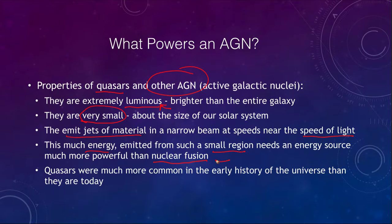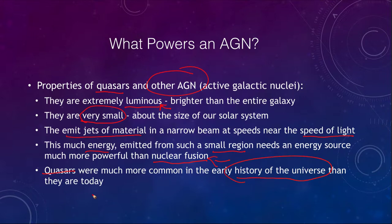This much energy emitted from such a small region needs an energy source much more powerful than nuclear fusion, which powers the stars. We also see that quasars were much more common in the early history of the universe — that's when they were around — whereas today they are not.